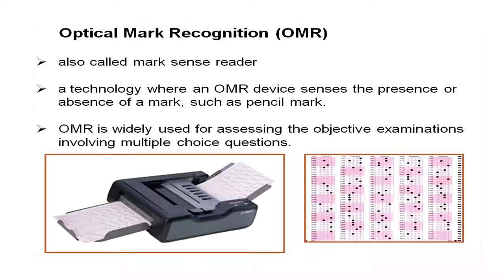The next input device is OMR — Optical Mark Recognition — a mark sense reader. This technology is used for evaluating multiple choice question examinations. It senses the presence or absence of a mark such as a pencil mark, as shown in the slide — an OMR sheet is shown and the OMR machine is sensing it to verify how many answers are correct and how many are wrong. This is very useful for assessing objective examinations involving multiple choice questions.